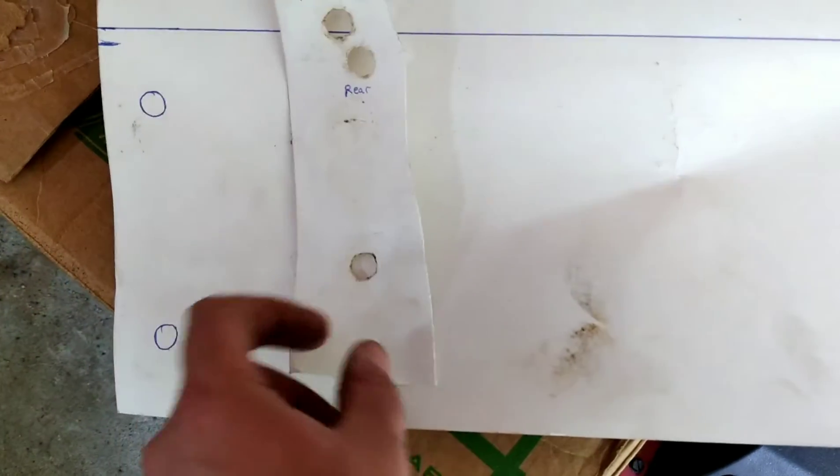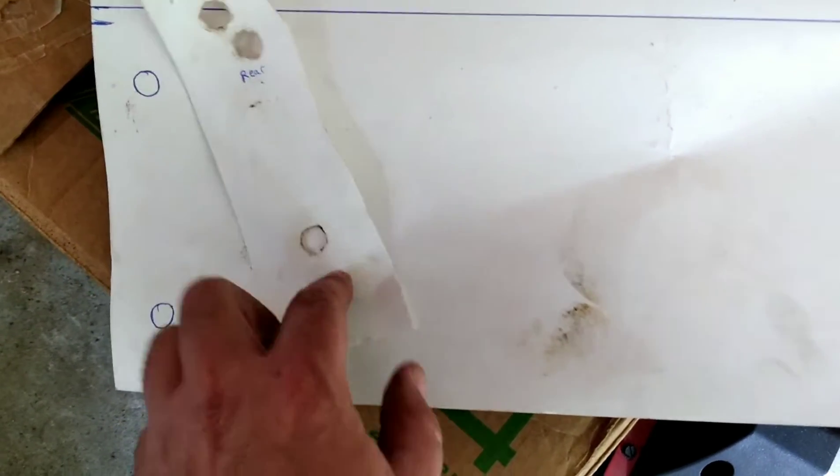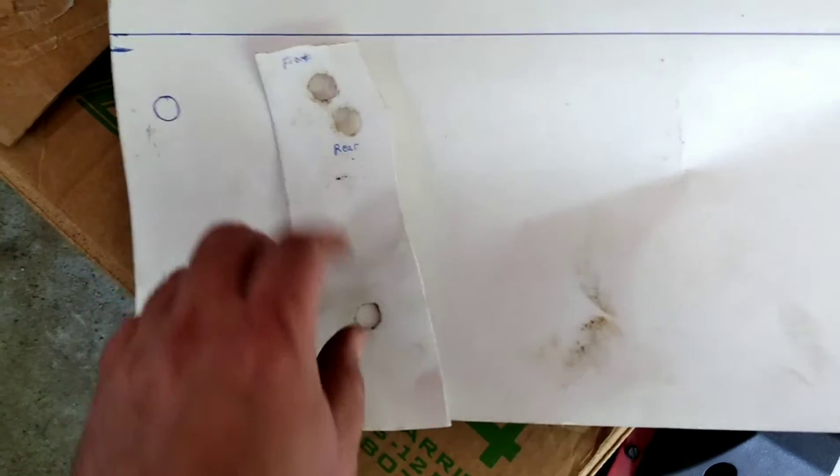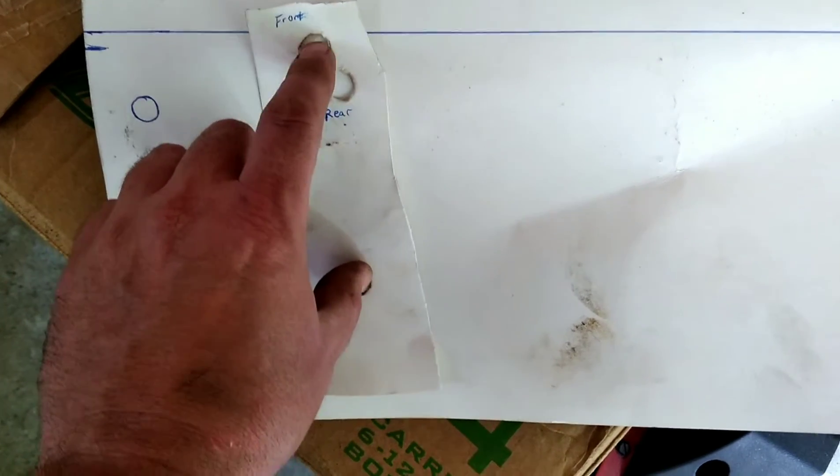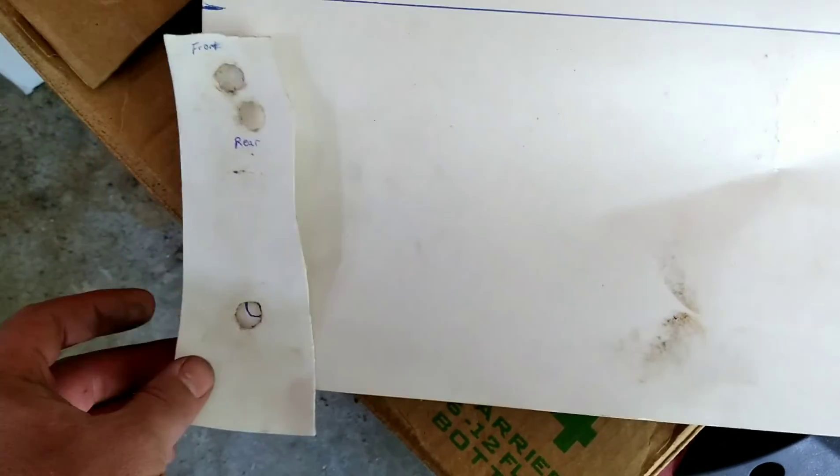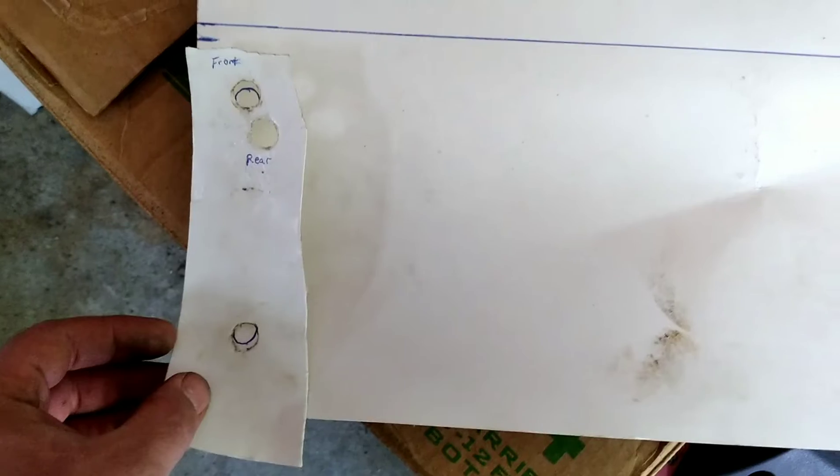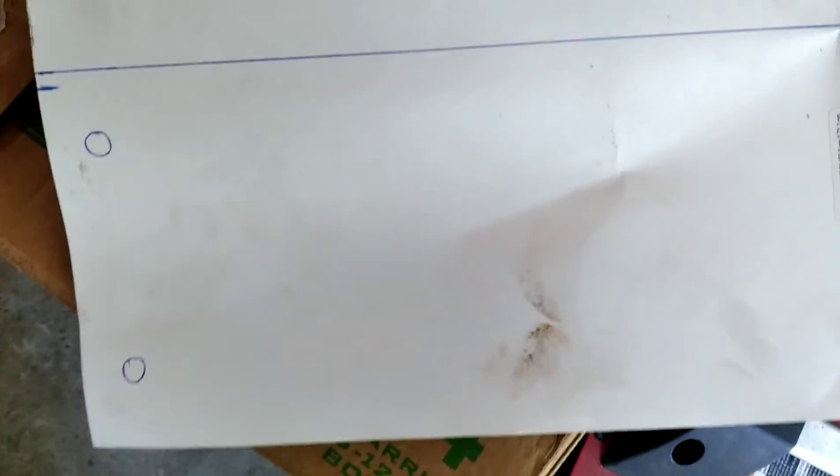Basically what it does is it cuts the poster board and you're able to get the distance between the bolt holes. Obviously they're a little different, so I get front and I get rear. So you transfer that pattern over to your poster board and I got a rough shape that I want to cut.